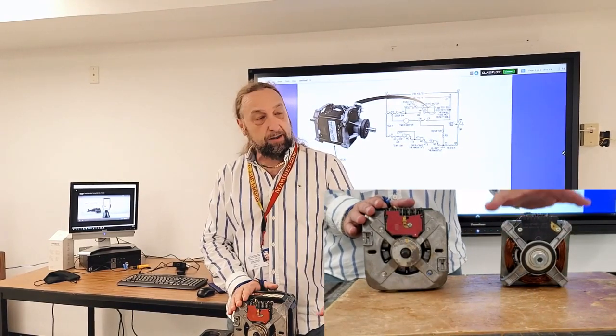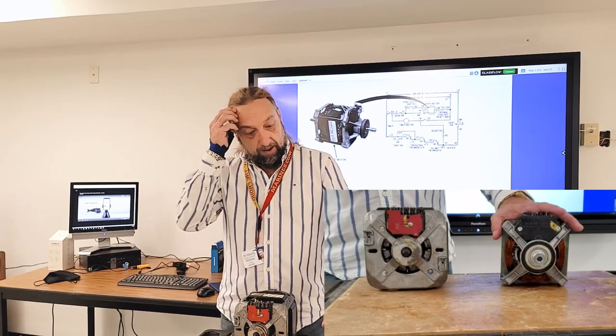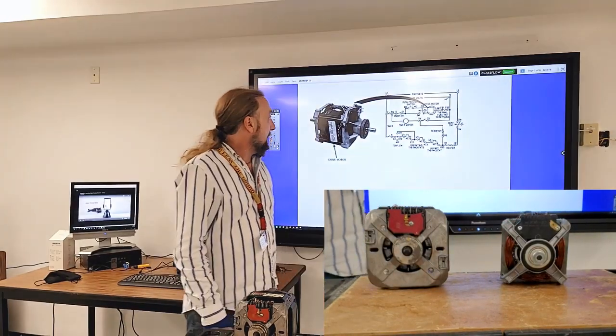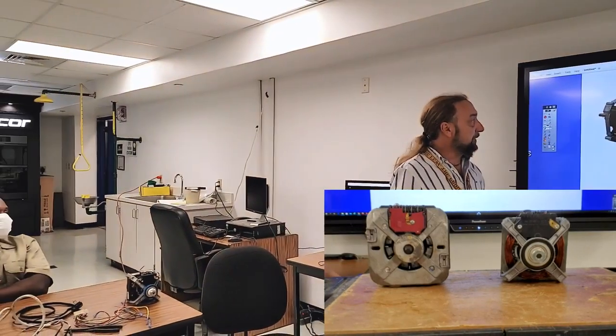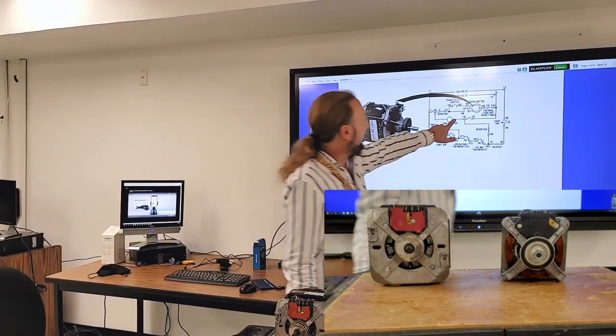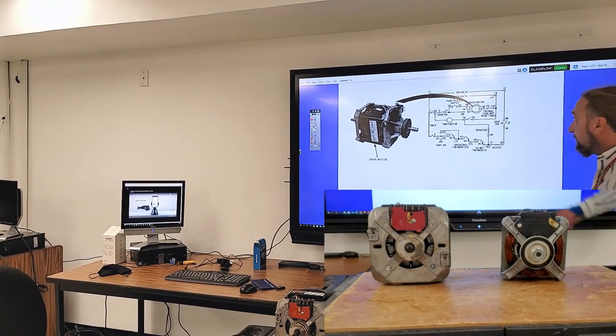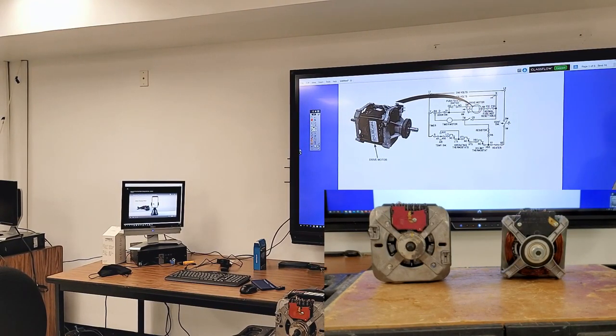This is from what they call a direct drive washer, so we're going to talk about how to hook this up and actually run it to test it to see if it's working. This was one of the projects that you had to do. Now we got the dryer motor here. This one has a different centrifugal switch.